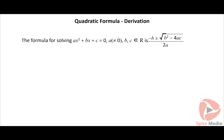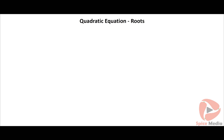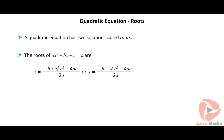Let us derive the quadratic formula. The formula for solving ax² + bx + c = 0, where a ≠ 0 and b, c are elements of ℝ, is x = (−b ± √(b² − 4ac)) / 2a. Click on the derivation button to view the derivation of the quadratic formula.